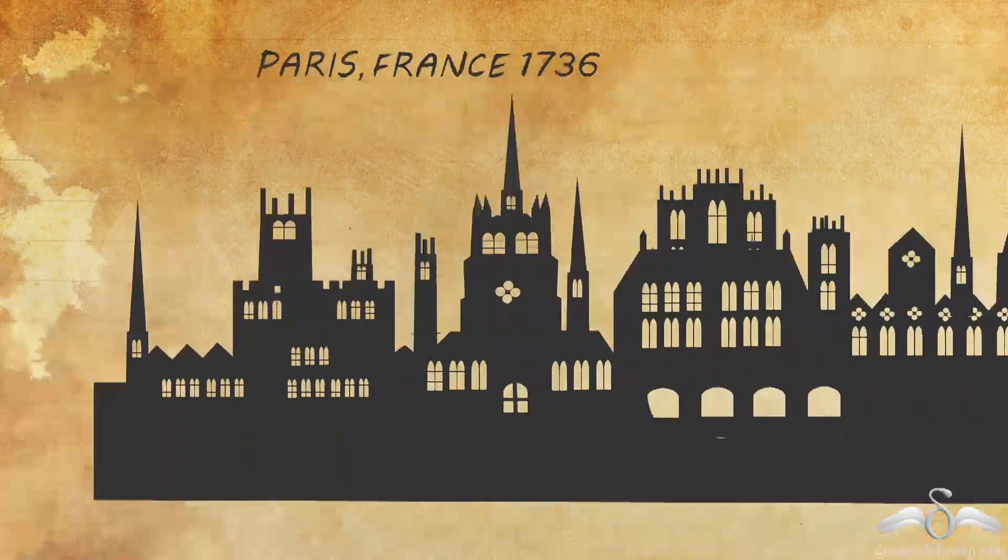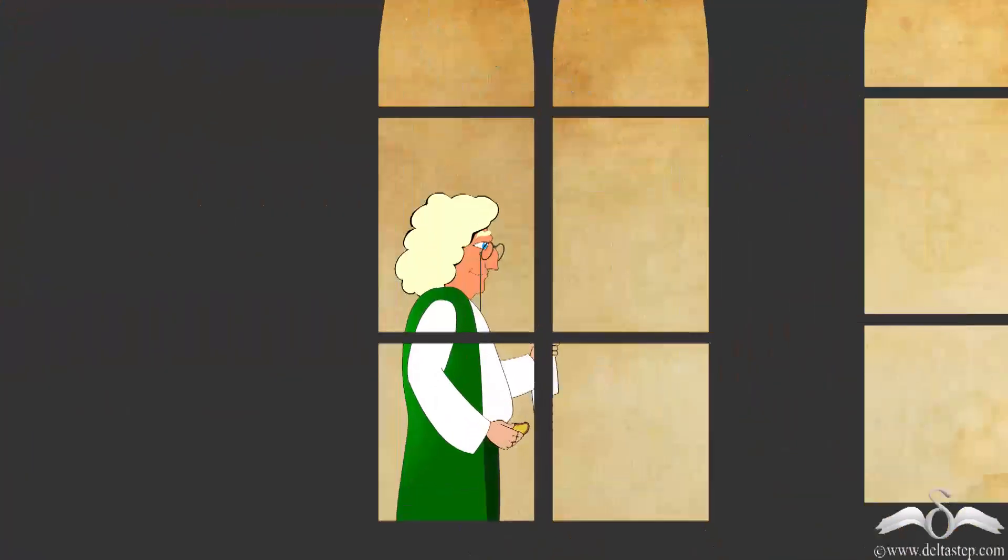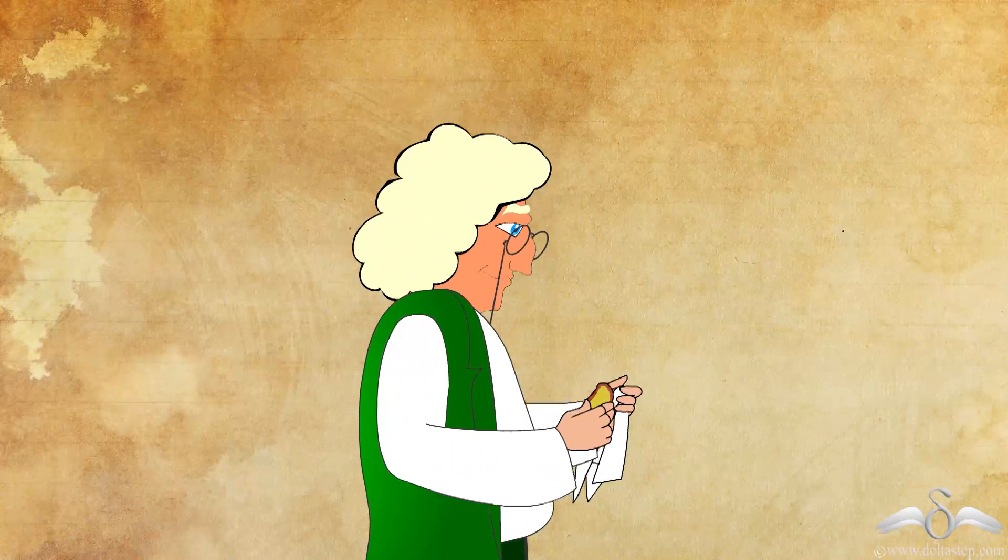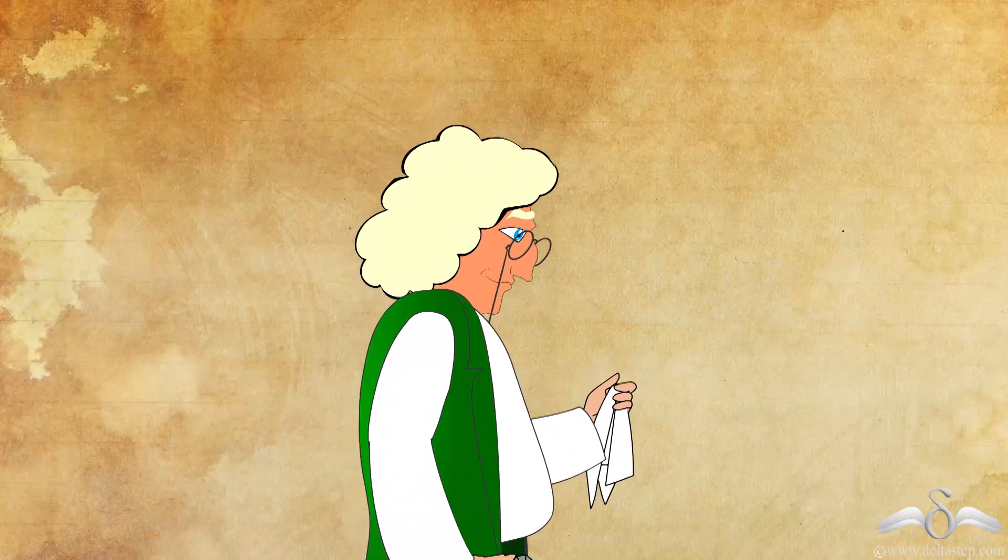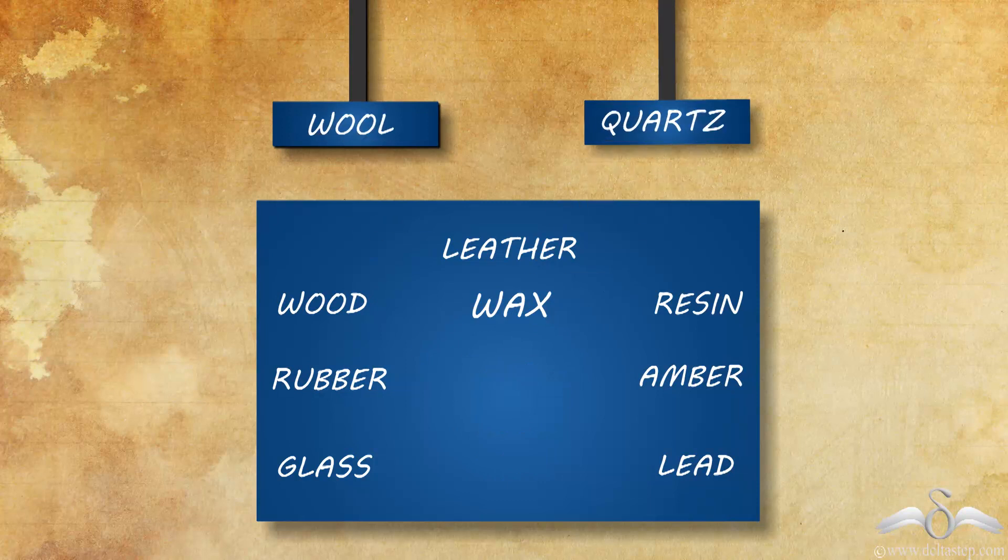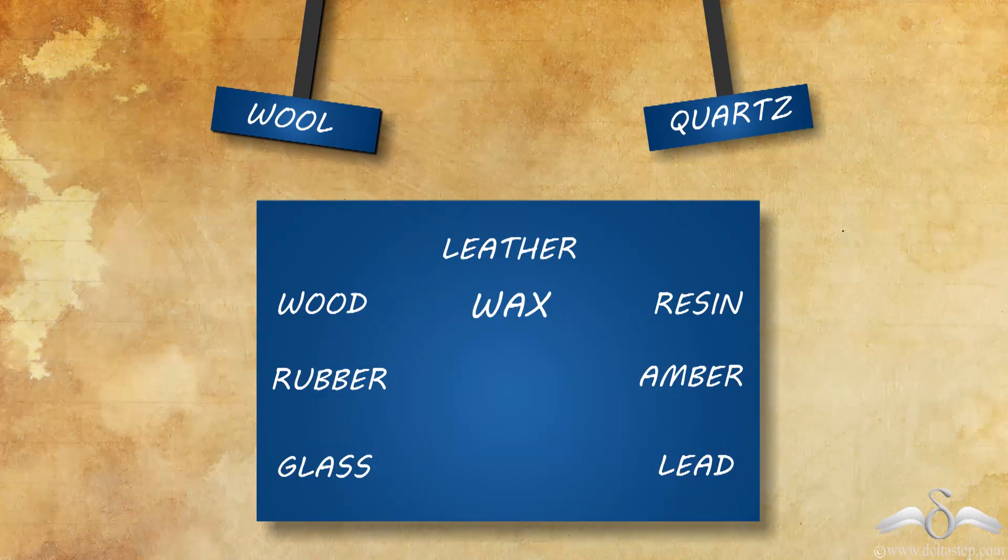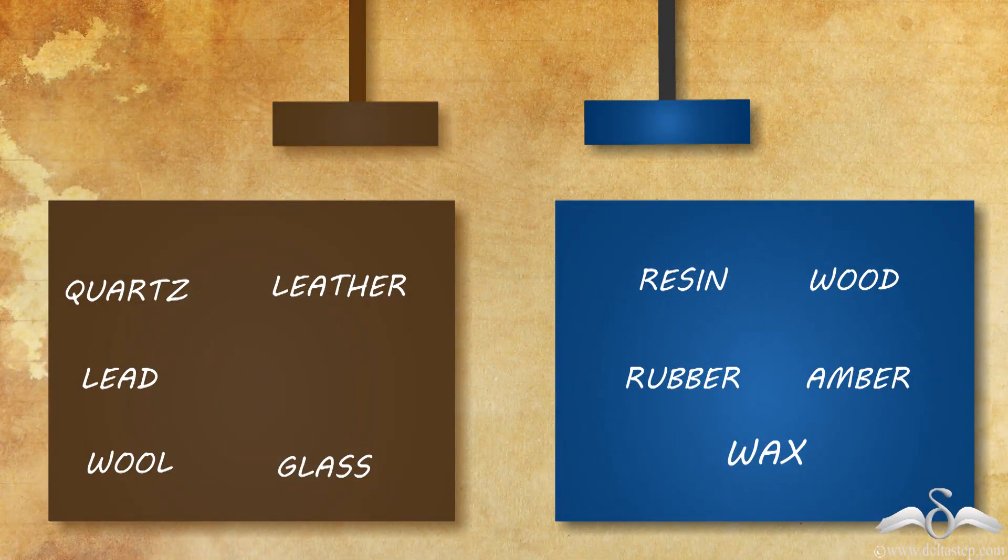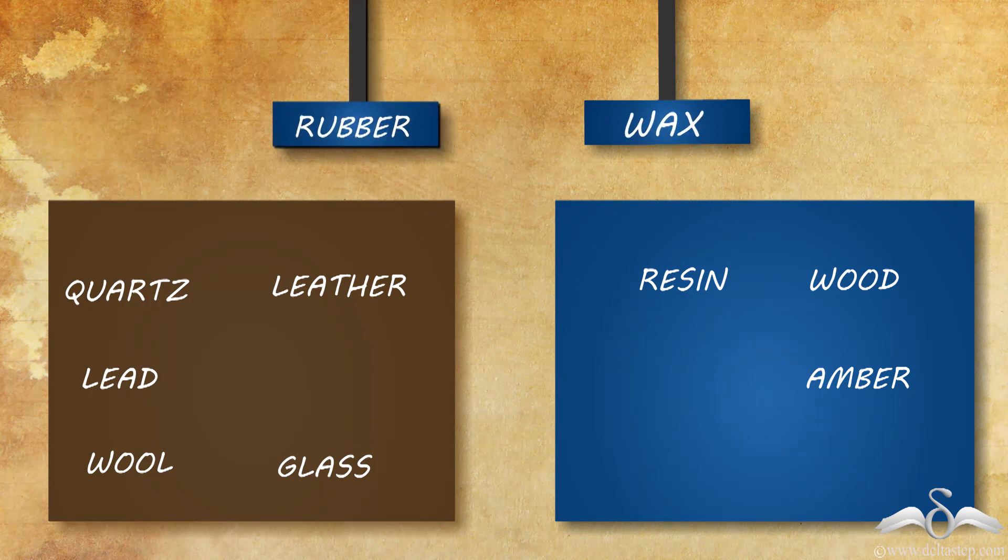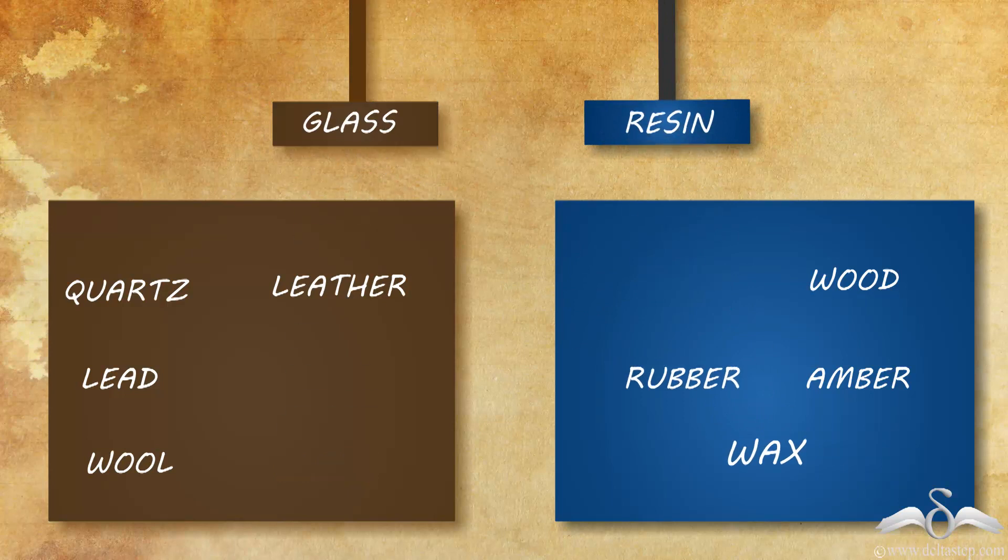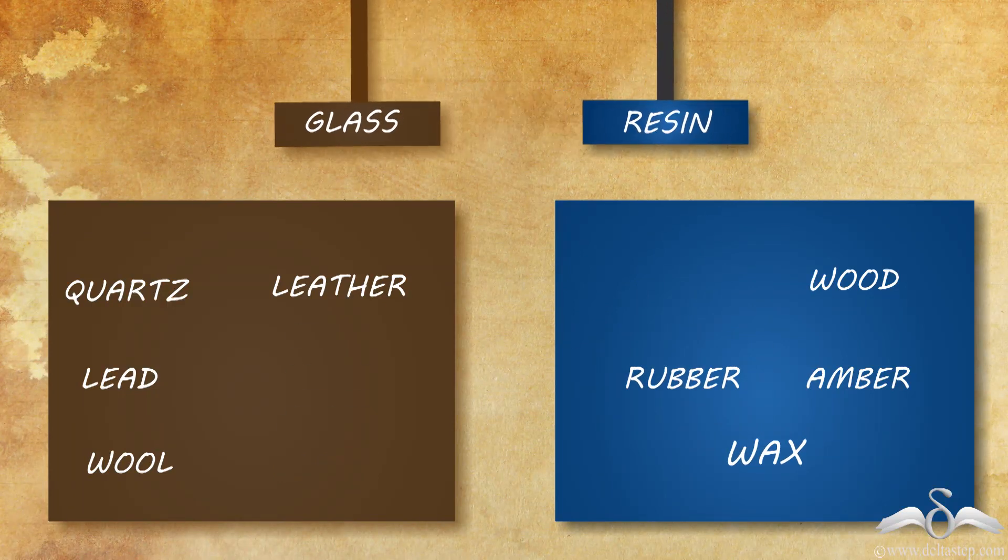So in 1736 in France, another man called Charles Duffet performed further experiments. He found that when two objects were rubbed against one another or heated, unless those objects were liquid or gases, they attracted or repelled one another. So since there were two cases, he classified these two objects into two groups and then observed that if two objects were taken from the same group and rubbed, they repelled one another and if they from the opposite groups, they attracted one another after being rubbed.